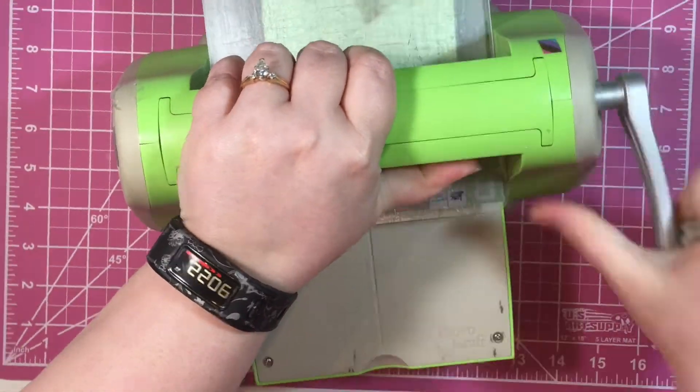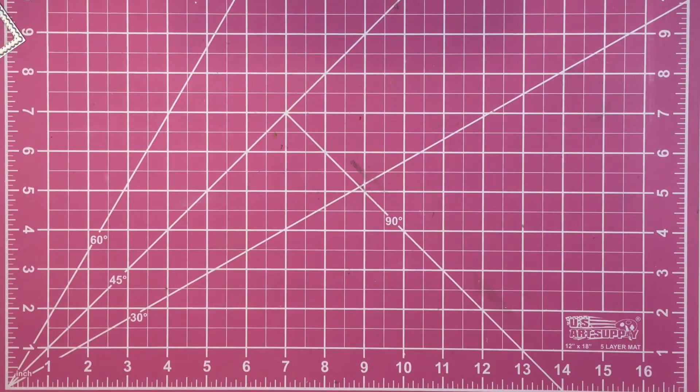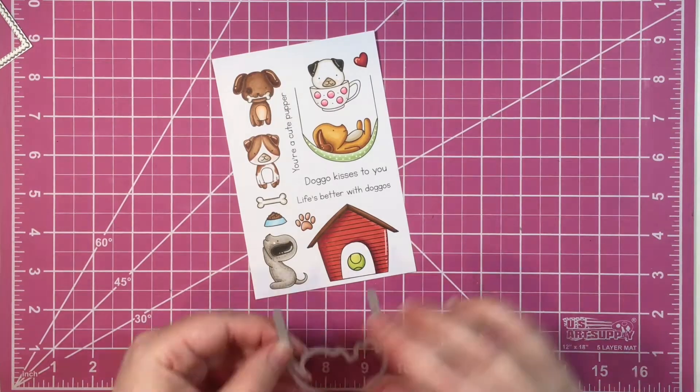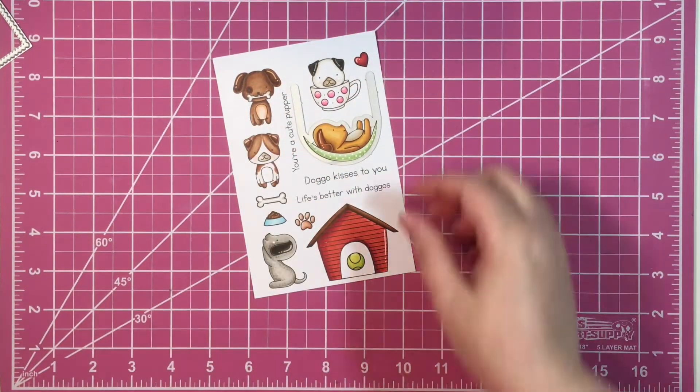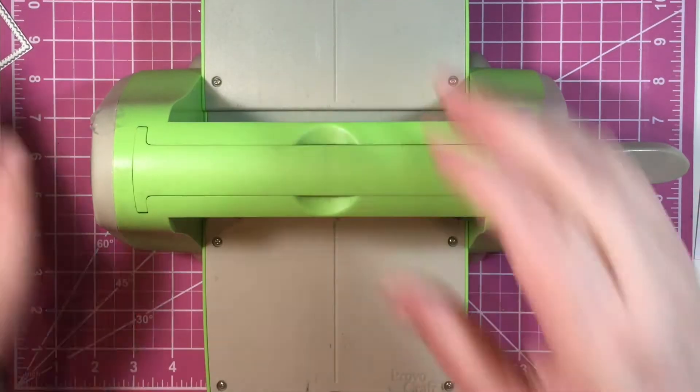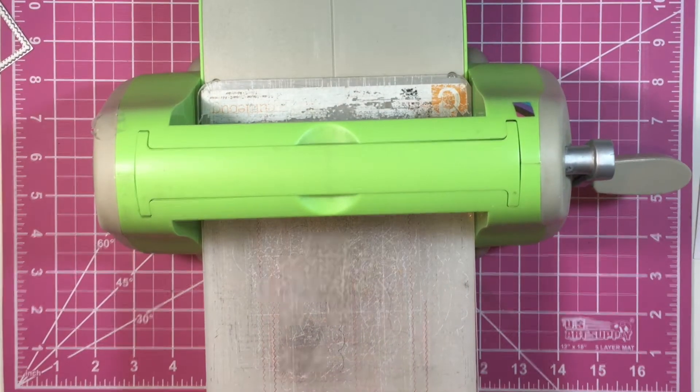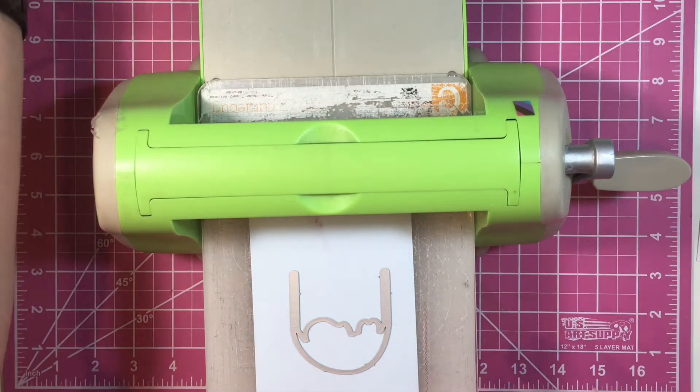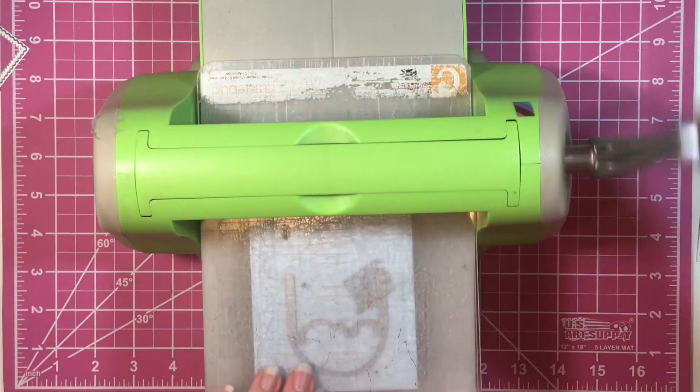To create the window on the card, I took the die and taped it down to the front of the card. Then I turned the card inside out, because if you were to keep the card the correct way and run it through, you would cut through both layers. When you turn it inside out, the back layer is sitting on top and won't get cut out.